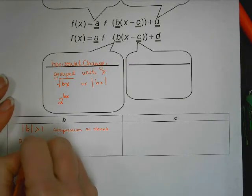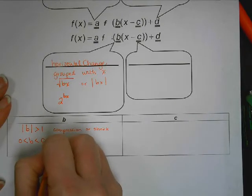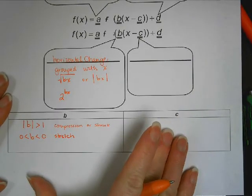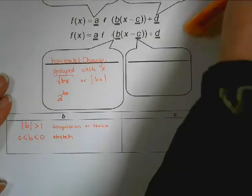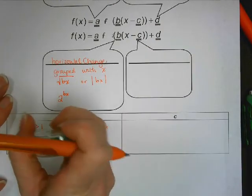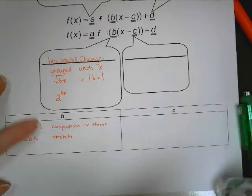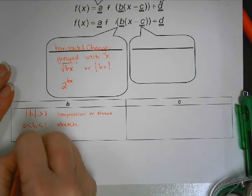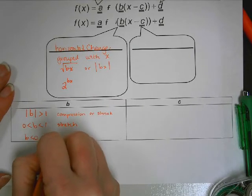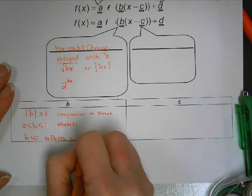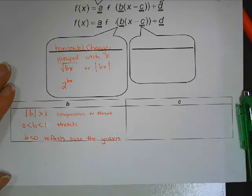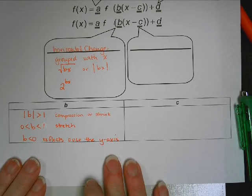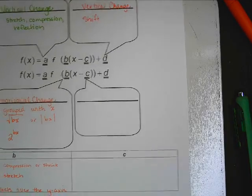If B is between 0 and 1, a fraction or a decimal, then it's a stretch. And the only one that is normal is if B is less than 0, it is still a reflection. It reflects over the y-axis, which is a horizontal change.